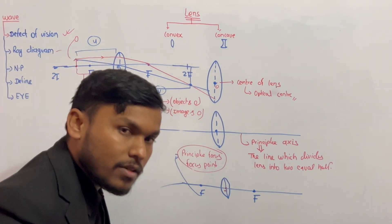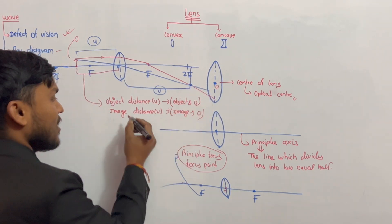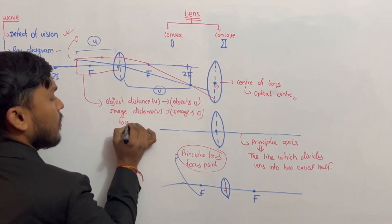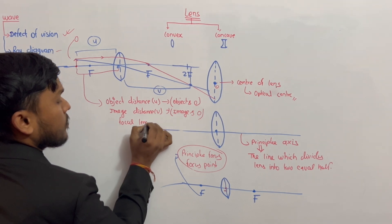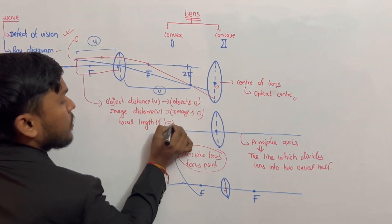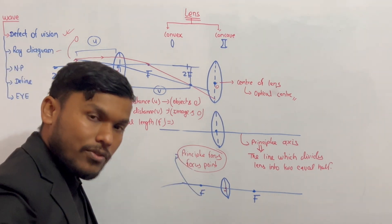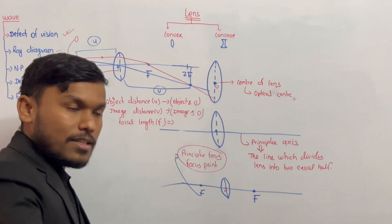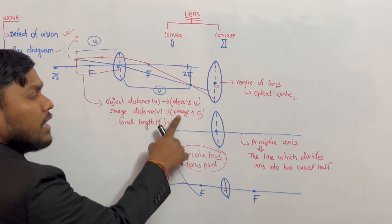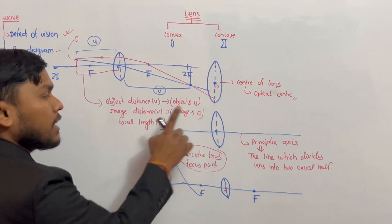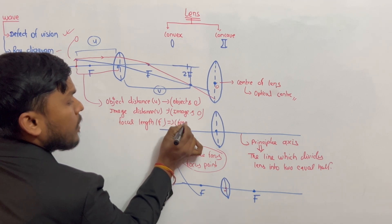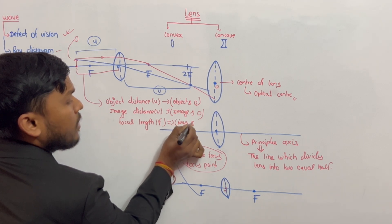The focal length — F-O — focal length is the distance between the focus point F and the optical center. So: object distance = object and optical center; image distance = image and optical center; focal length = focus point F and optical center.